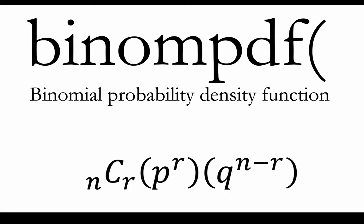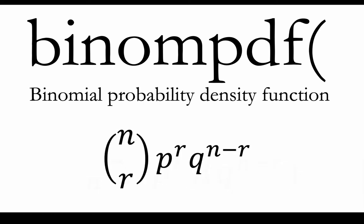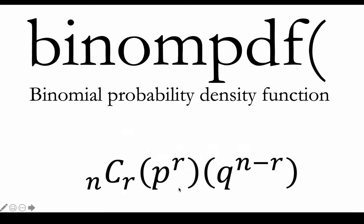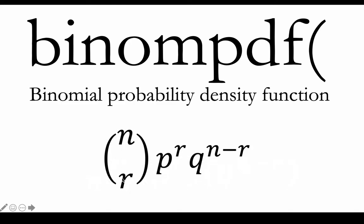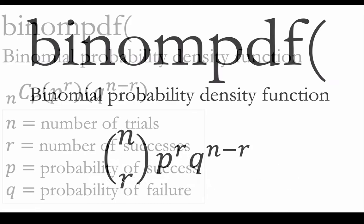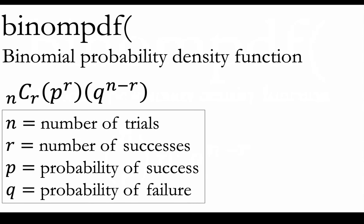And it looks something like this. You might also see it written like this, but those are the same thing, right? We've got n choose r also written this way, n choose r. And we'll go over what each of these things mean.